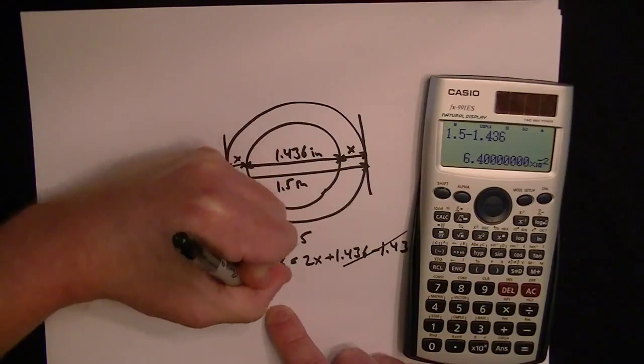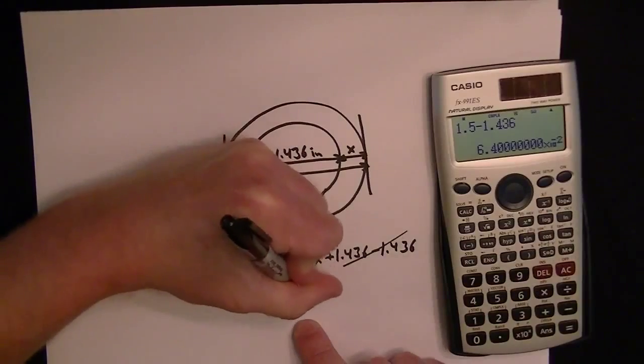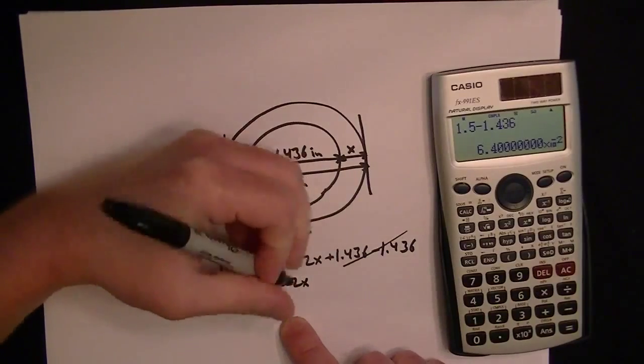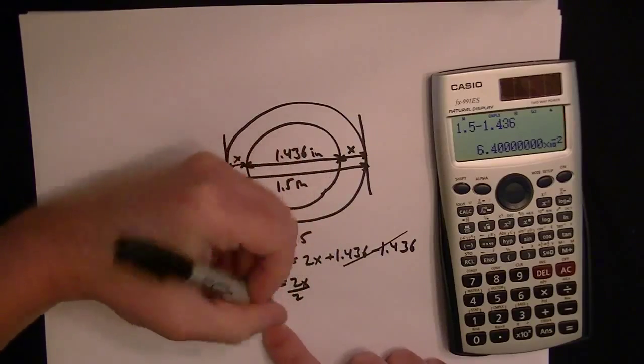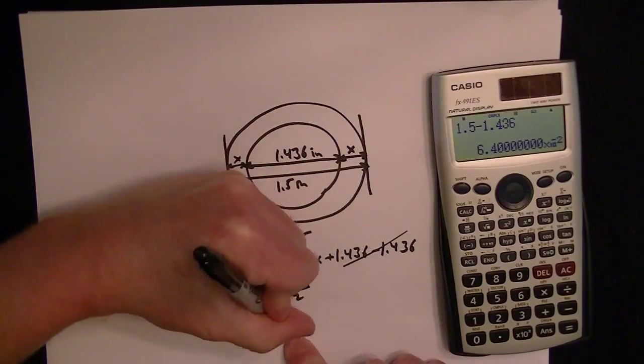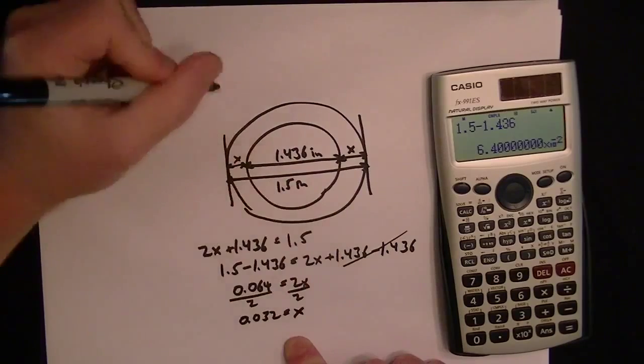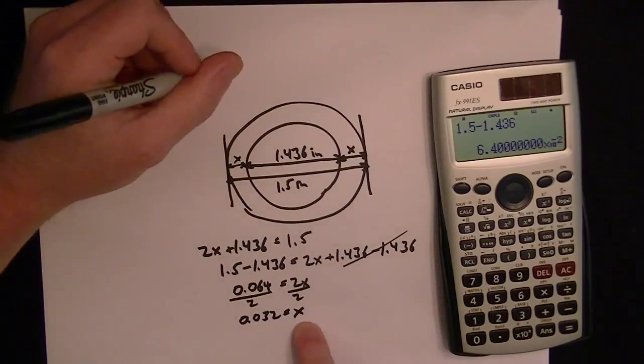Actually, sorry, 0.064 is equal to 2X. So now you just can divide each side by 2 to get rid of that 2. And so that's going to give me 0.32 is equal to X. So that's what X equals to.